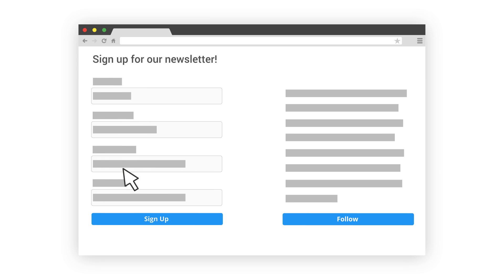For a lead generation site, the macro conversion might be filling out a contact form with a micro conversion of following the site on social media.